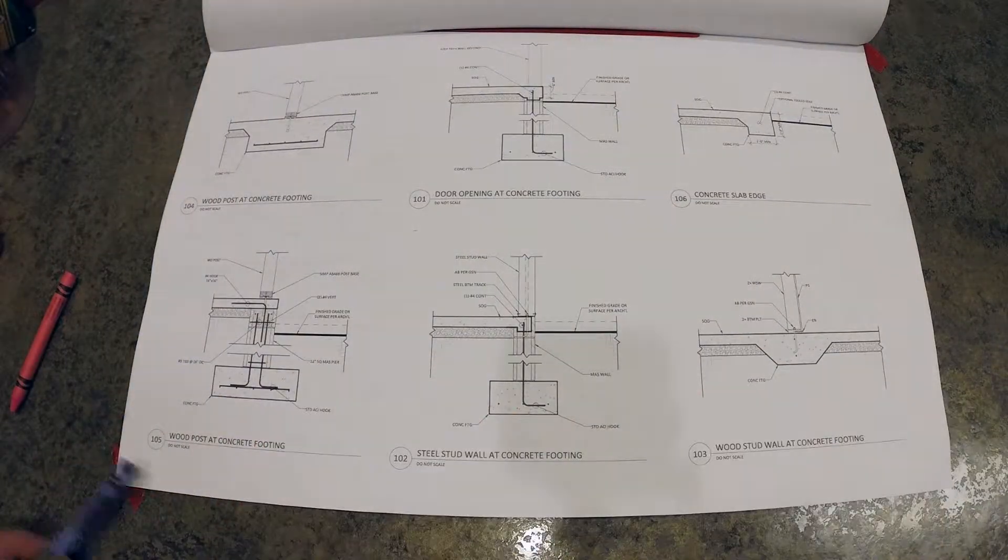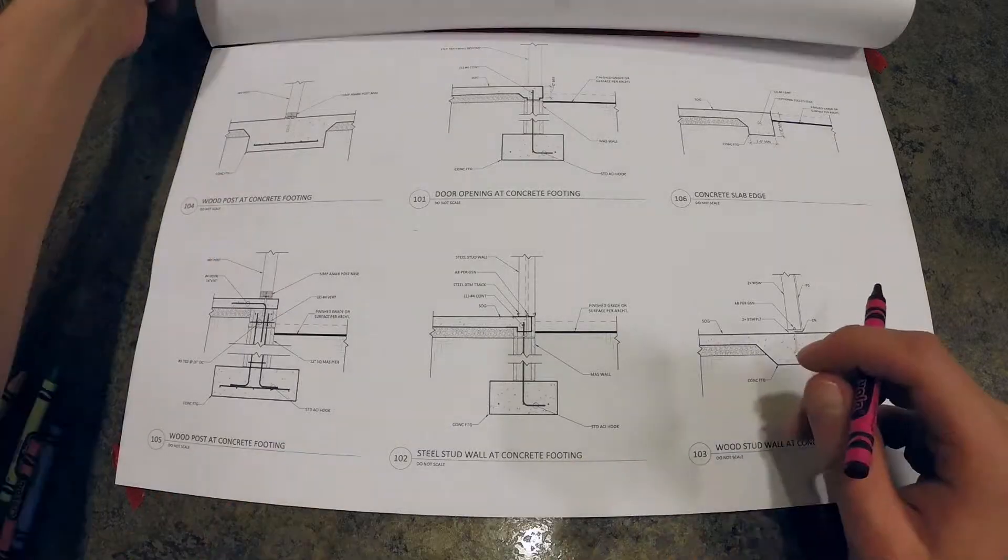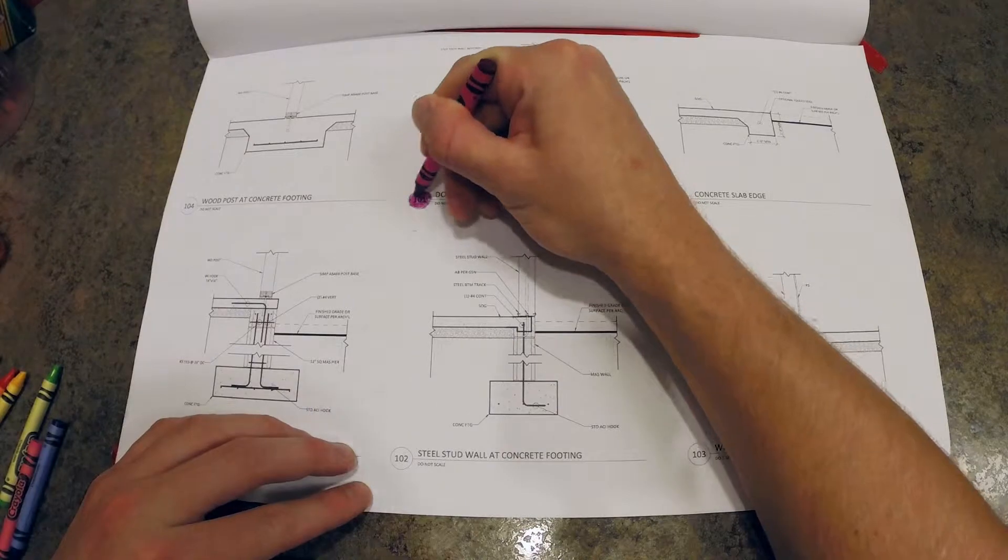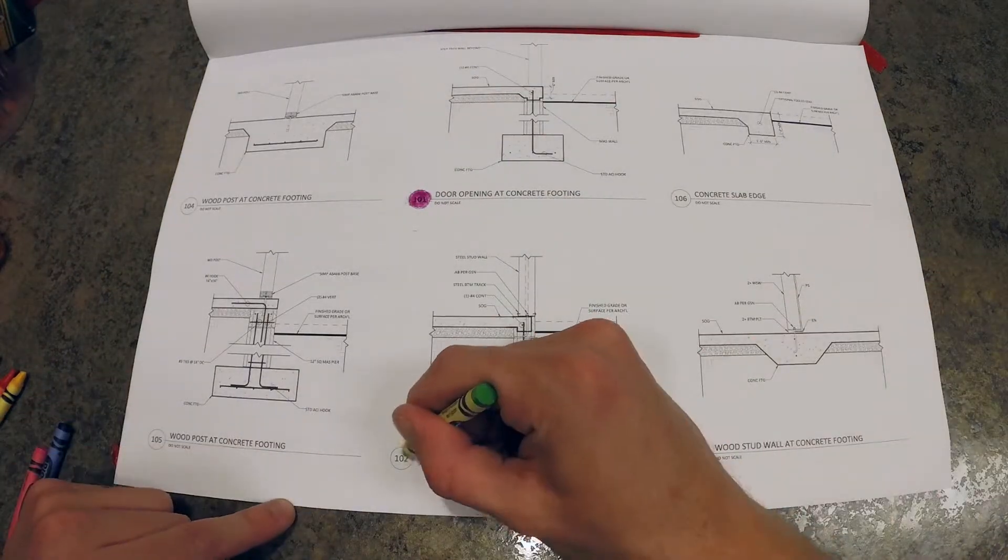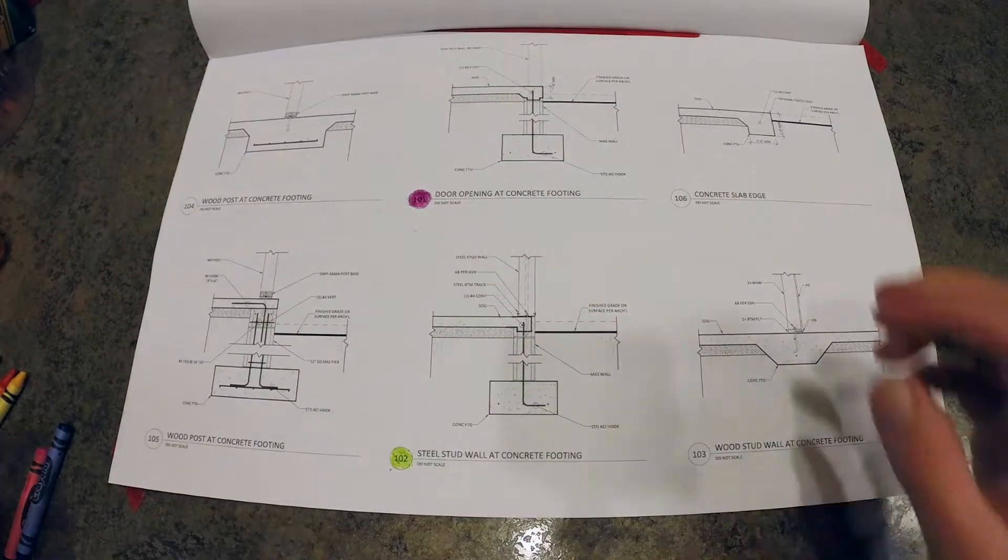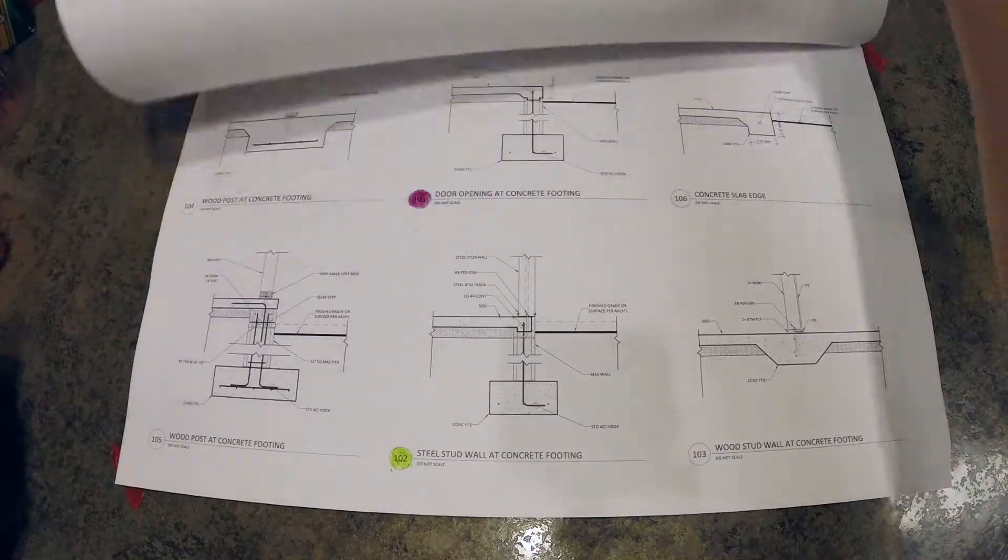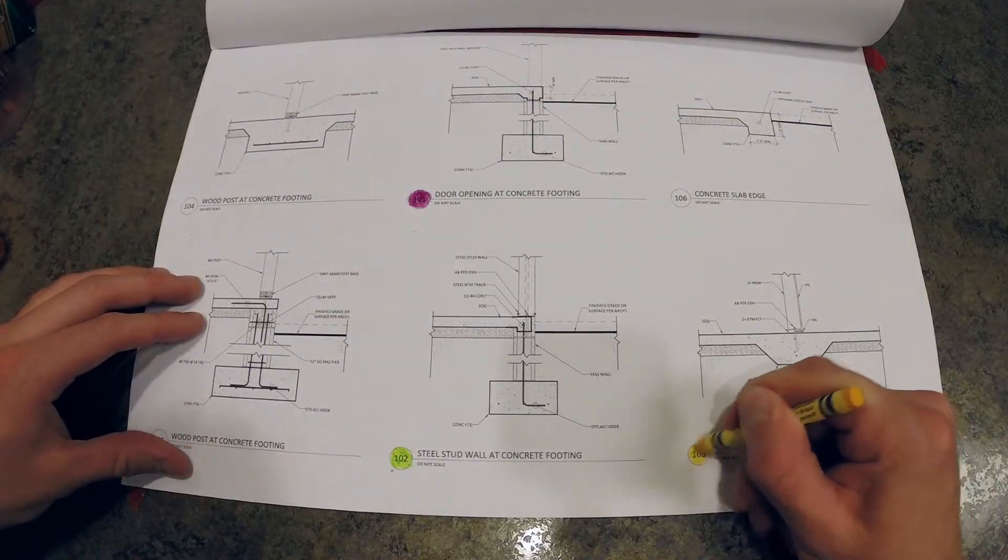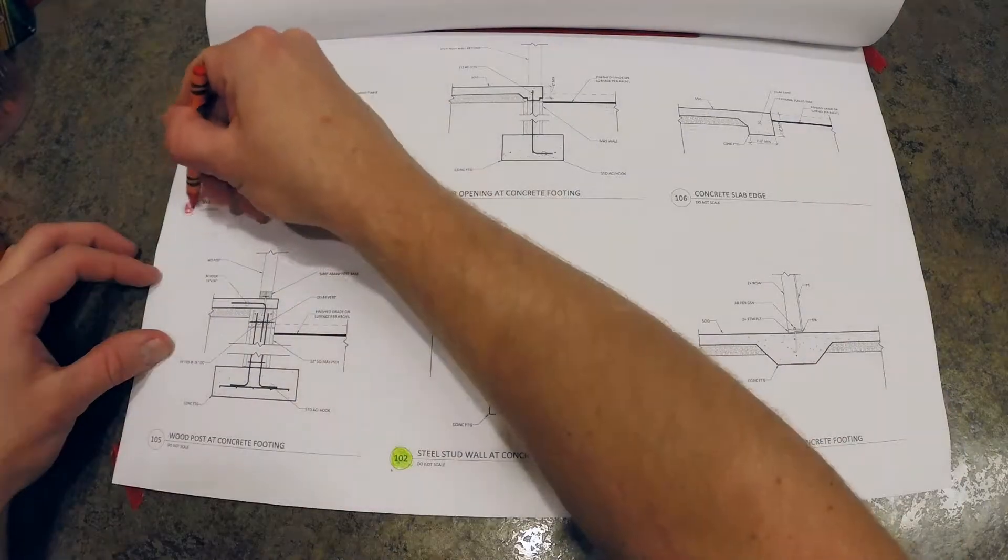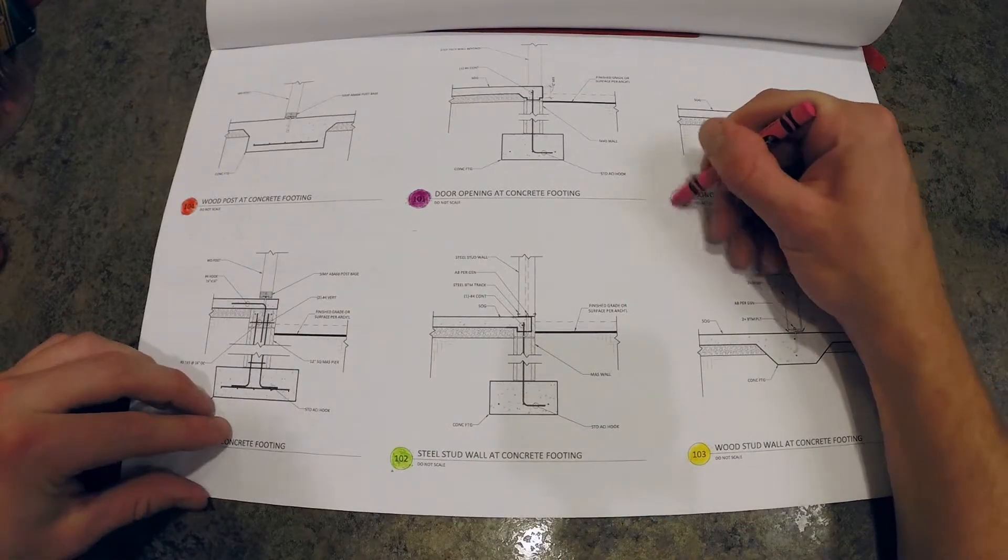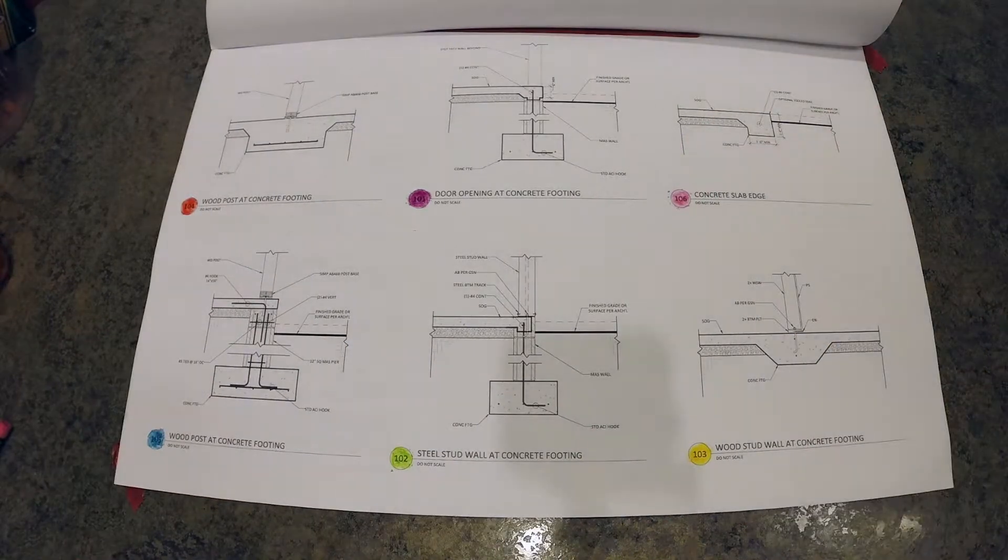So here we're looking at the details. We're going to go ahead and color each of these to match what we've already drawn on the plan view. This is just going to help us keep track of everything that we're doing. Now if you notice, each of these details says not to scale on them, so we're not going to be pulling dimensions off this, but we will be pulling our general shape.